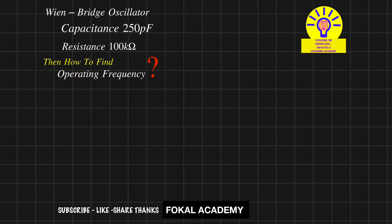First of all, understand what is the operating frequency. At which frequency the oscillator will oscillate, that frequency is called as operating frequency. It is also called as resonant frequency. Now, how can you find it? We have one direct relation.